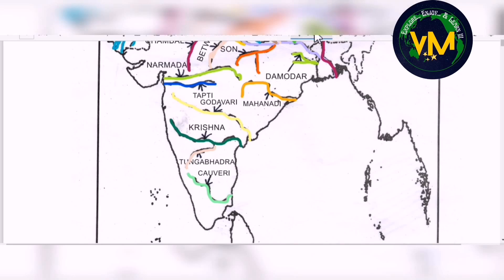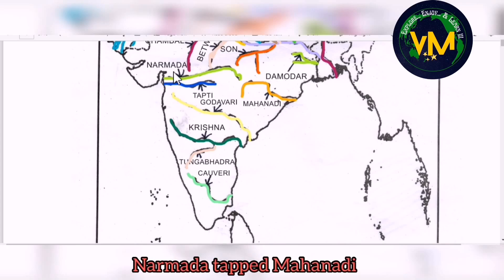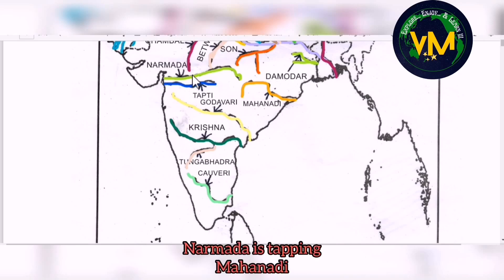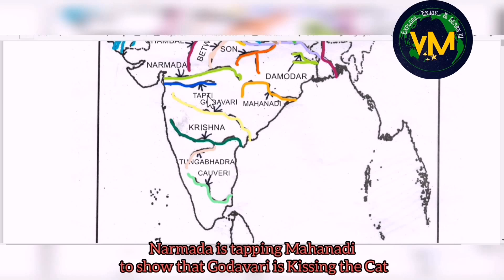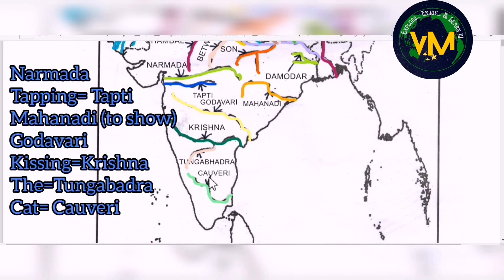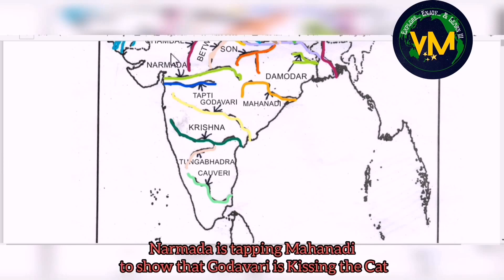Now, how to remember these peninsular rivers? Remember: 'Narmada tapped Mahanadi to show that Godavari is kissing the cat.' Narmada and Tapti come first, then Mahanadi. Godavari is followed by Krishna (K for kiss), then Tungabhadra (T for 'the'), and Kaveri (C for cat). So: Narmada tapped Mahanadi to show that Godavari is kissing the cat.